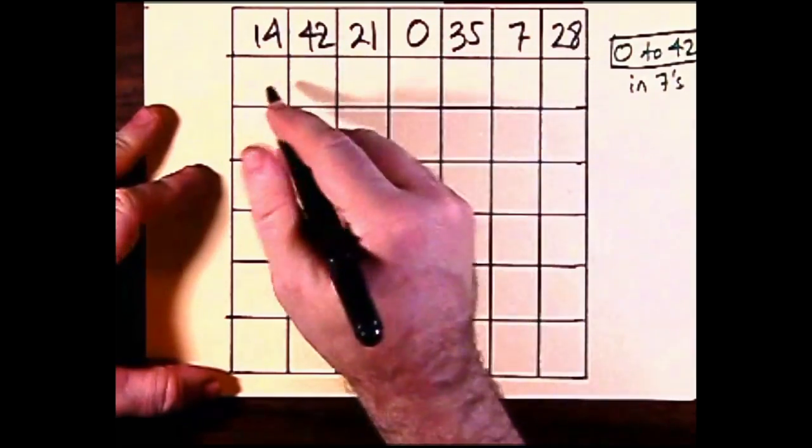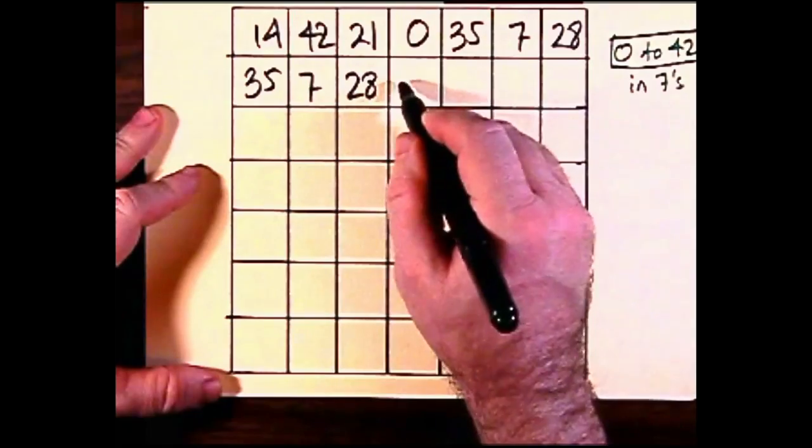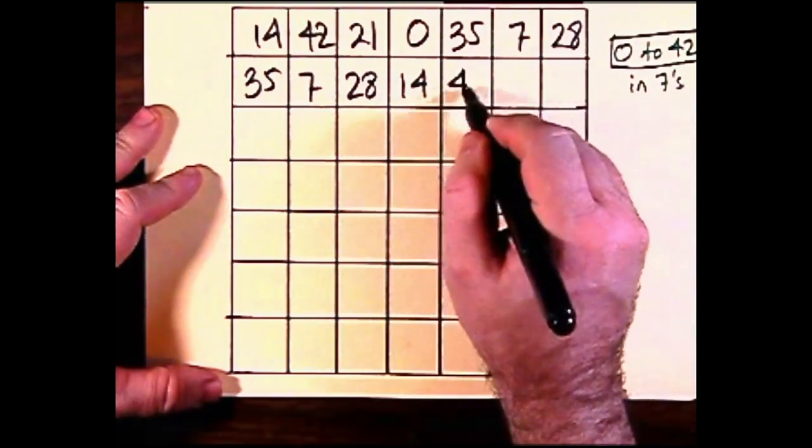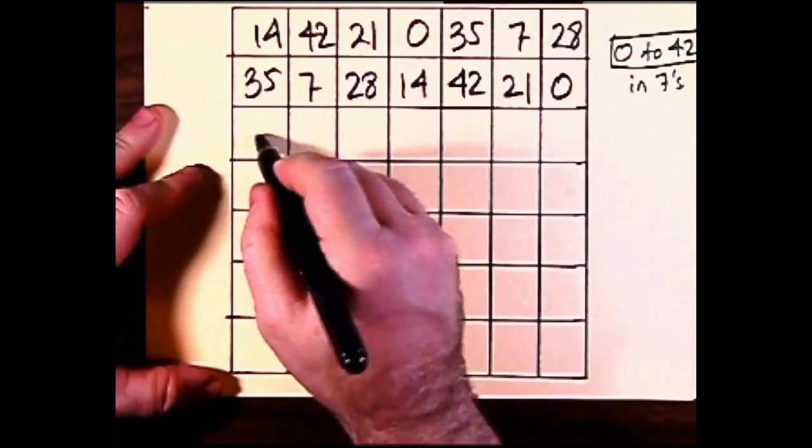Then finish that second row with the first four of the previous row, and we carry on exactly that same way for all the other rows. We're just going to speed up this process a little bit for you here.